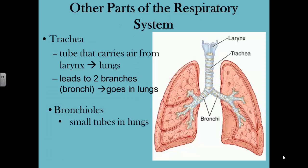Here are some of the parts of the respiratory system. The trachea is the tube that carries air from the larynx, which is at the top of your throat, to the lungs. The trachea leads to two branches, labeled bronchi, as you can see here. The bronchi carry the air into the lungs. The things branching out from the bronchi are bronchioles, which attach to the lungs.